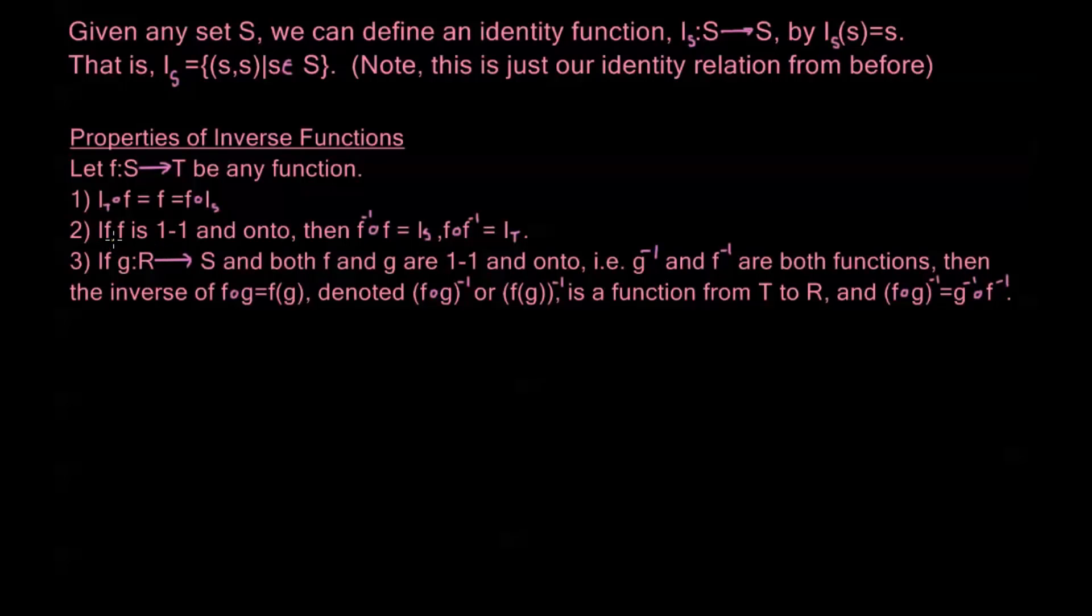Now the second one says, if F is one-to-one and onto, or in other words, if the inverse exists, then F inverse composed with F is the identity mapping on S, and F composed with F inverse is the identity mapping on T. So let me go into a little more detail here.